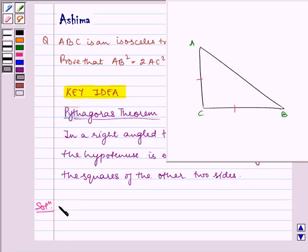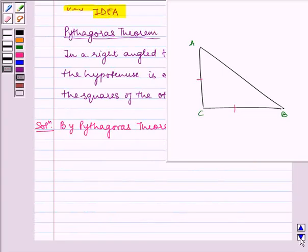So, by Pythagoras theorem on triangle ABC we can write, which implies AB square, that is the hypotenuse, is equal to AC square plus BC square.